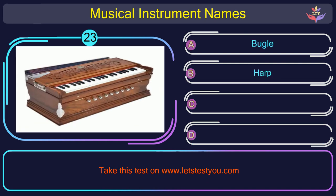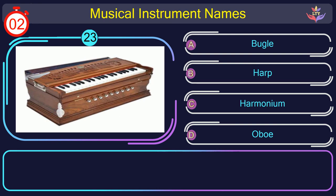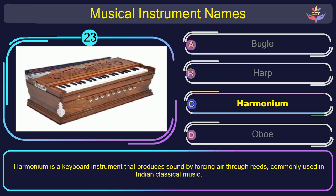Question number 23. Could you recognize the name of the musical instrument in this picture? The correct answer is option C: Harmonium. Harmonium is a keyboard instrument that produces sound by forcing air through reeds, commonly used in Indian classical music.